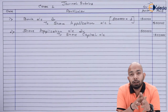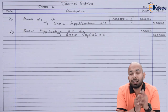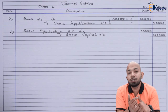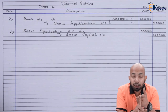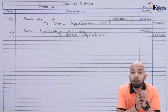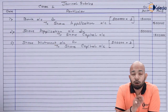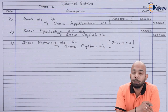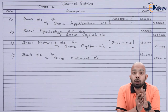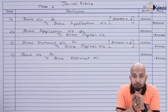Moving on to allotment due and received: in Case 1 there were no calls in arrears at allotment stage; calls in arrears occurred only at the first call stage. On allotment, we expect ₹15 lakh again — 5 lakh shares multiplied by ₹3 — and the receipt entry for allotment is also passed. Next, we pass journal entries for the first call due.